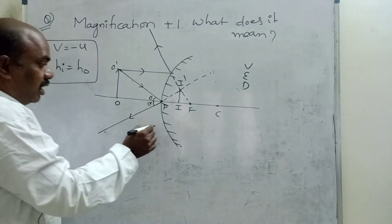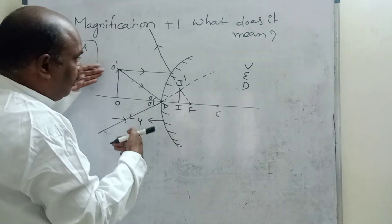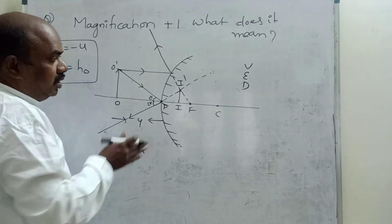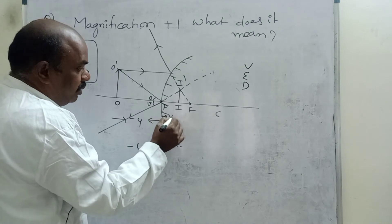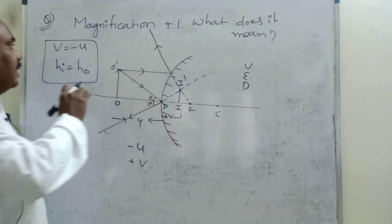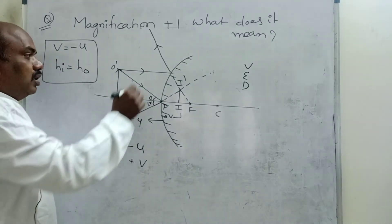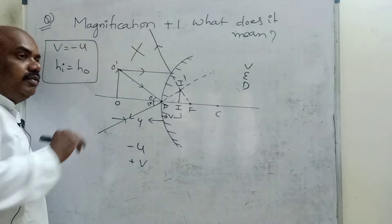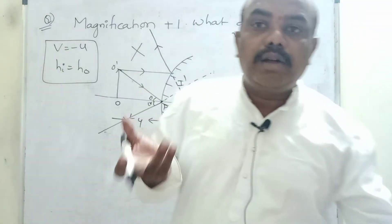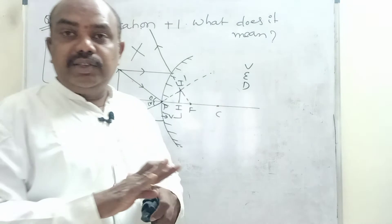Checking the first condition for convex mirror: pole to object distance measured from right to left compared with left to right — object distance is negative. Image distance (pole to image) is positive, because image is on the non-reflecting side — so measuring from pole, image distance is positive. The first condition seems satisfying, but the second condition is not satisfied. So this is not a convex mirror. Magnification plus 1 means it is not a concave mirror and it is not a convex mirror.